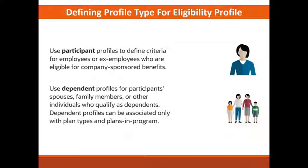So we are going to start with the two types of eligibility profile here: the participant and the dependent. We are going to use the participant profile to define criteria for employees or ex-employees who are eligible for company-sponsored benefit. Maybe they are retirees and you are still carrying them for the benefit.